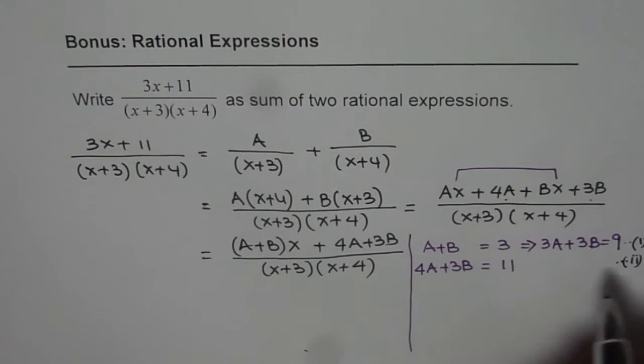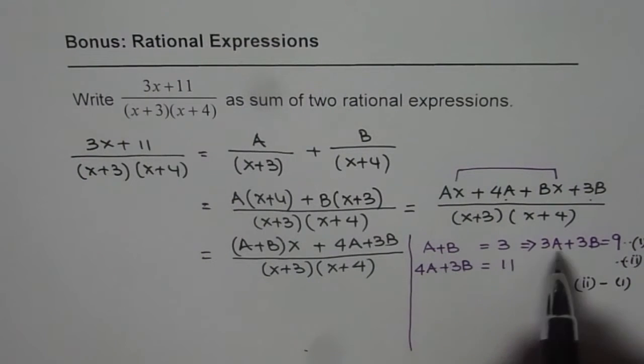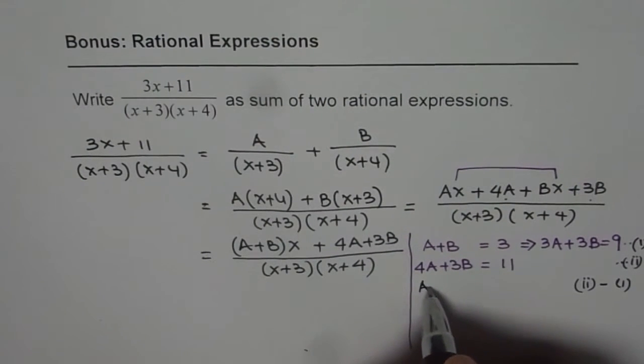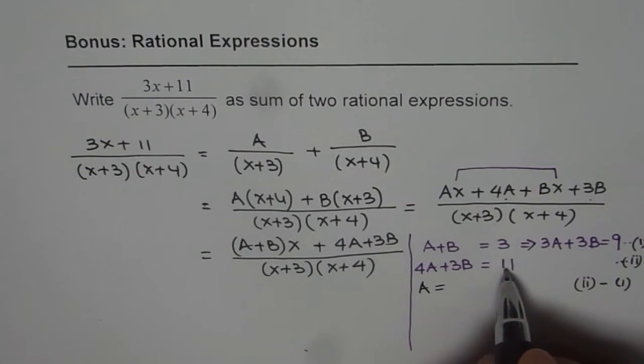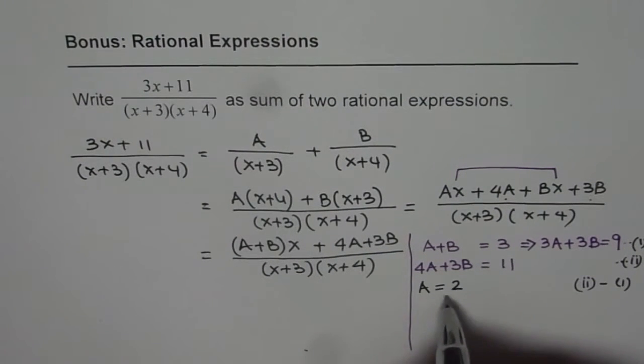Now if I do equation number 2 take away equation 1, what do I get? 4A minus 3A is A. 3B minus 3B is 0. 11 minus 9 is 2. So we get the value of A.